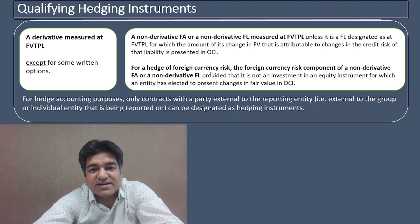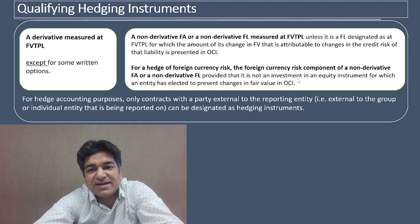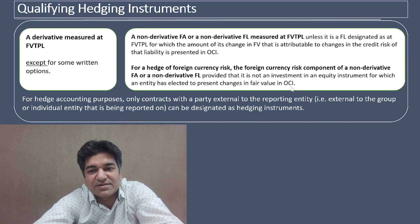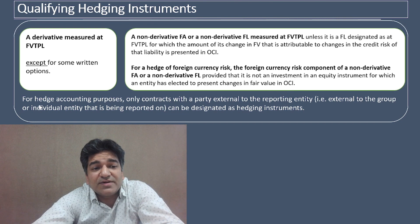In the case of a hedge of foreign currency risk, the foreign currency risk component of a non-derivative financial asset or a non-derivative financial liability may be designated as a hedging instrument, unless it is an investment in an equity instrument for which the entity has elected to present the changes in fair value in other comprehensive income.